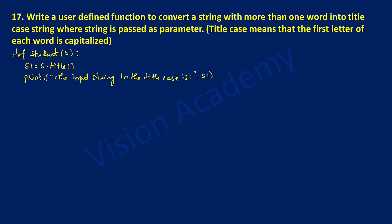Now the function definition is over. In alignment with the definition, I'm going to declare a variable called name and receive input from the user with an input statement. Then I'm going to take a variable called space and set it to the value 0.